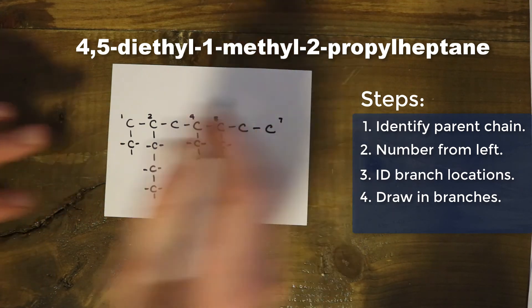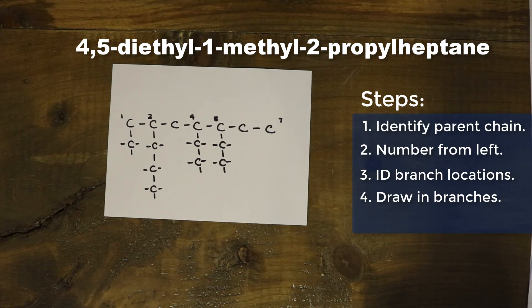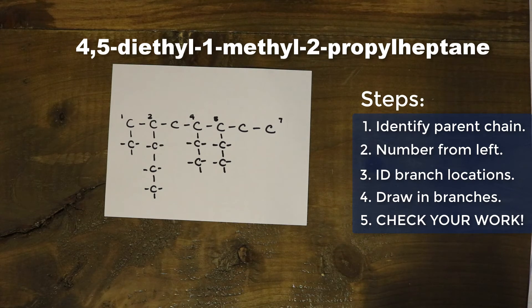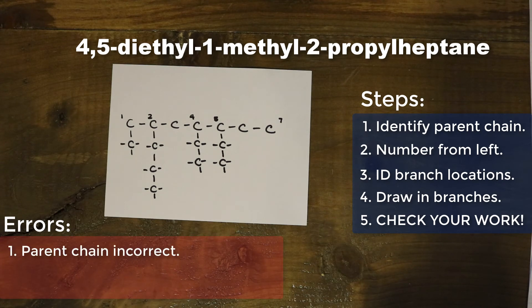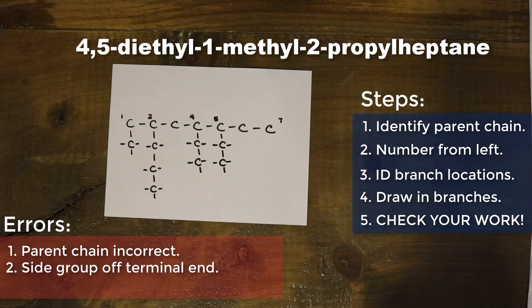Looking at the structure now, we have all the groups in what appear to be the appropriate locations. But wait — you might have noticed this isn't quite right. What you might have identified is that the longest continuous chain isn't actually a heptane. The longest continuous chain is in fact a bit longer. You might also have suggested we shouldn't have an alkyl group off the first carbon — and you'd be correct, but notice that that carbon isn't actually the first carbon anymore.